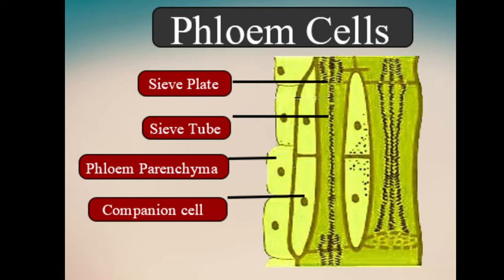The food is made in the mesophyll cell, also called the photosynthetic cell of the leaf. Food like sugar made by the mesophyll cells of the leaf enters into the sieve tubes of the phloem.